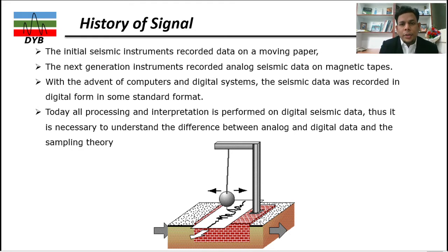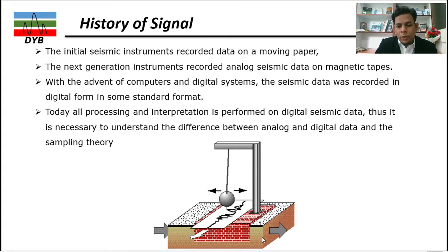Looking at the history of seismic data recording: initially, seismic instruments recorded data on moving paper. As shown in the picture, there is a pendulum hanging from a rope. When the ground moves — due to an earthquake or an artificially produced seismic signal — the pendulum moves and records the motion via a pen or pencil onto moving paper.